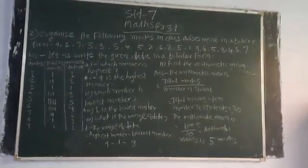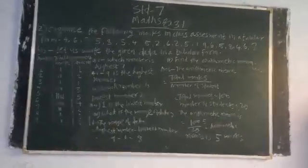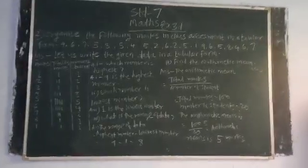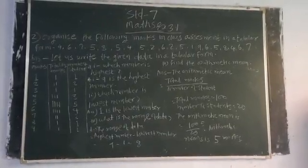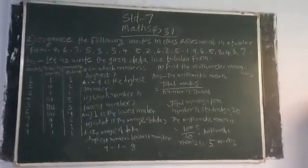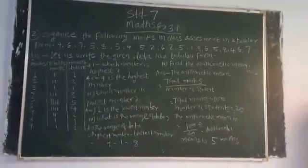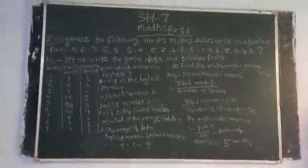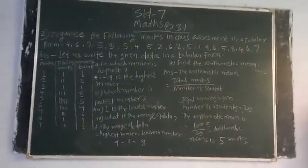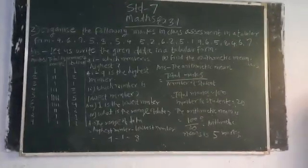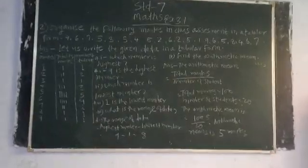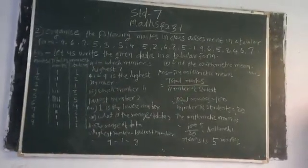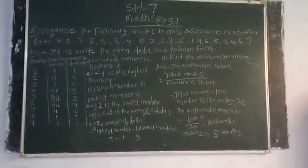Total marks equal 100. The number of students is 1+2+1+3+5+4+2+1+1, which equals 20 students. So arithmetic mean equals 100 divided by 20, which equals 5.